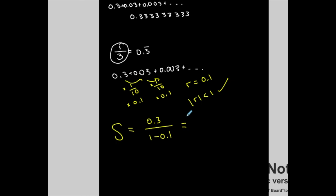0.3 divided by 1 minus 0.1. Change it to 0.3 divided by 1 minus 0.1. There.